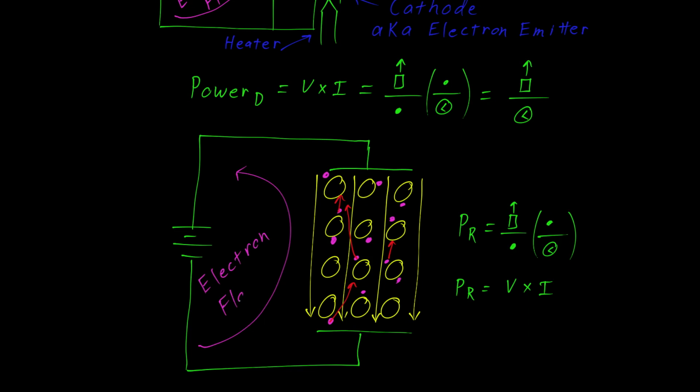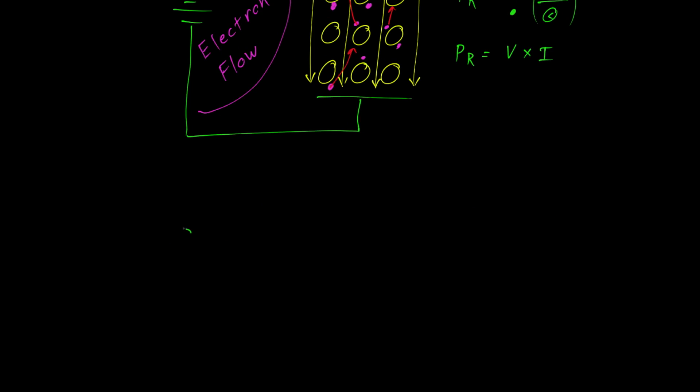Through this entire video, we've assumed electron flow. The electrons originated from the negative terminal of the battery, passed through the resistor, converted electrical energy into heat, and then returned on the positive terminal of the battery.